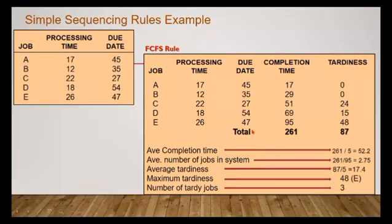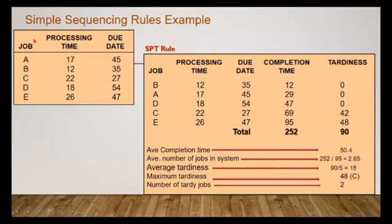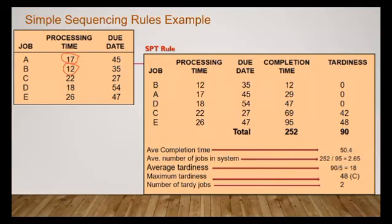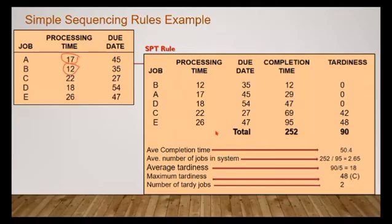The next rule is shortest processing time. Using the SPT rule, the same jobs are now given priority by their processing time — the shortest processing time gets priority. The shortest processing time here is 12, followed by 17, followed by 18, and so on. So we consider job B first, then job A, then job D with 18, then job C with 22, then job E with 26. You have to rearrange the jobs in that order.